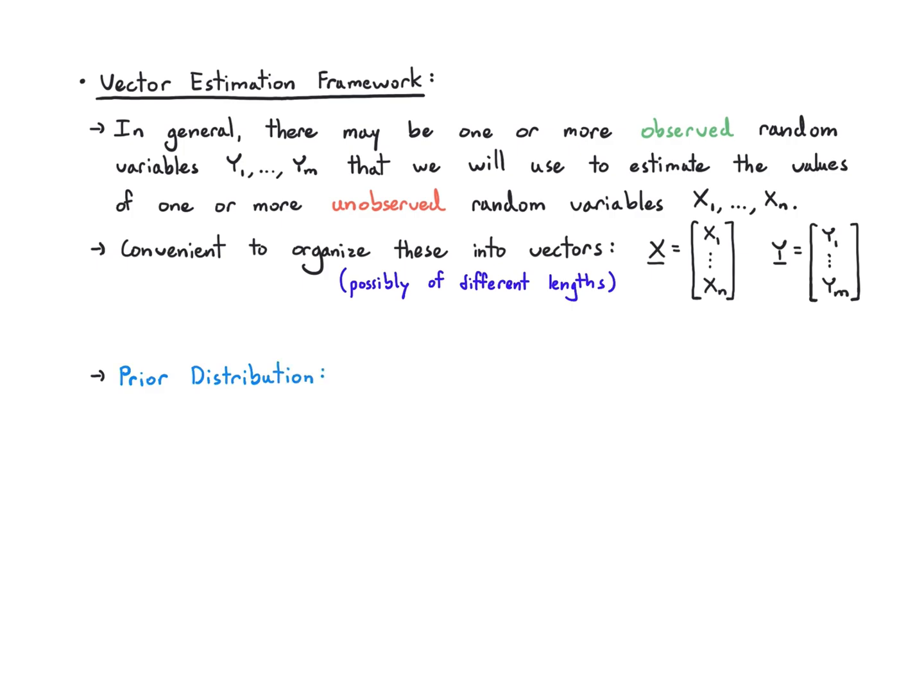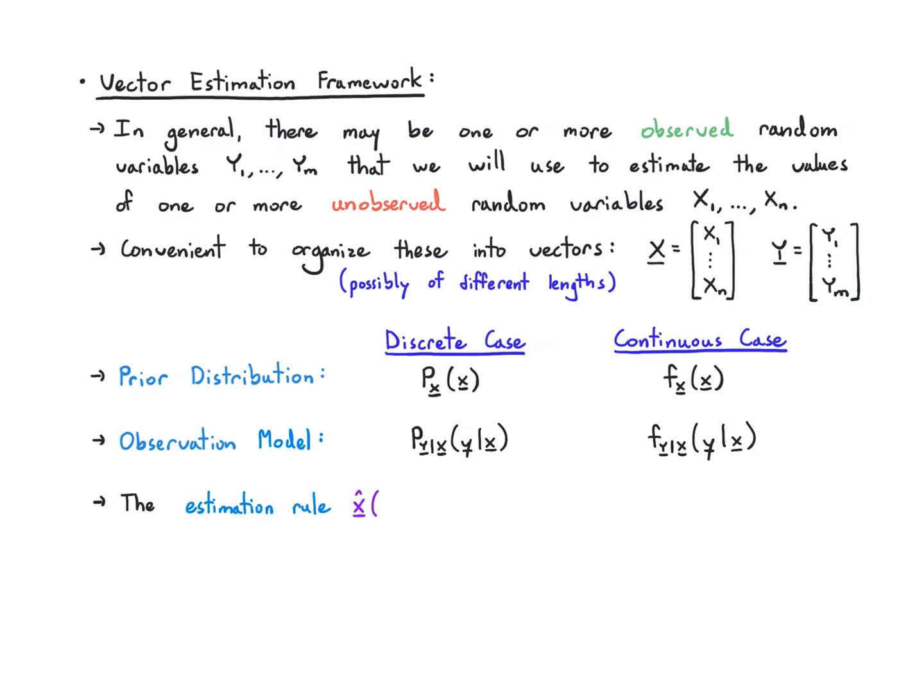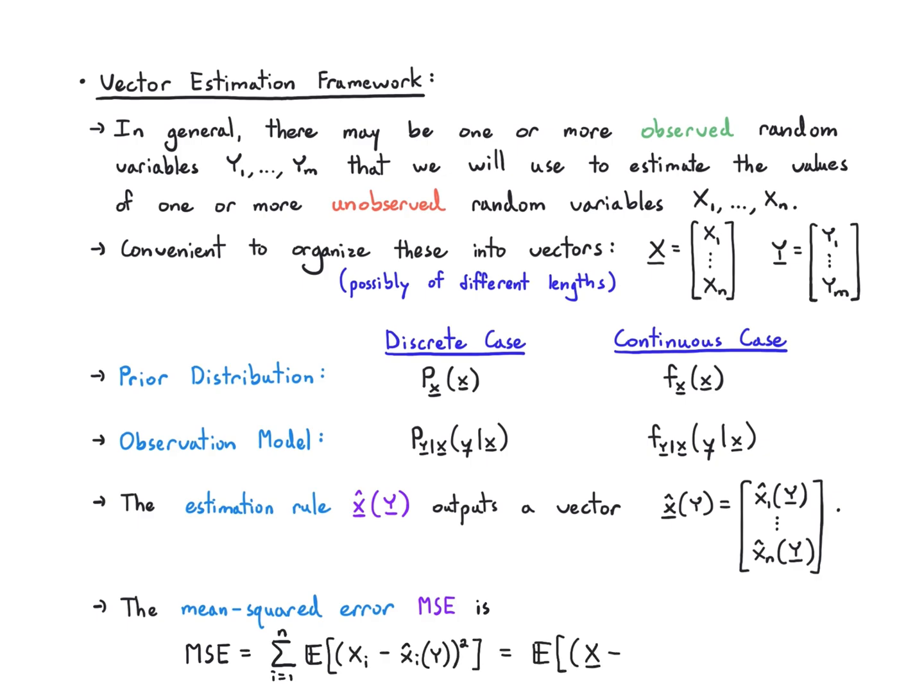Here's the basic framework. We have a prior distribution - in the discrete case that's a PMF, in the continuous case a PDF. We have an observation model, which is a conditional PMF in the discrete case and a conditional PDF in the continuous case, now over vectors. An estimation rule has to put out a vector of estimates for x1 up to xn, and can use the y vector as input. The mean squared error is the sum of the mean squared errors for the individual random variables - each of the xi's has a mean squared error, we just add them up. We can get that through this inner product if we wish.